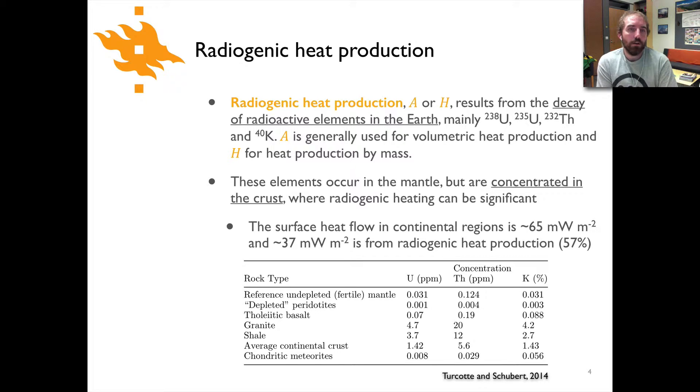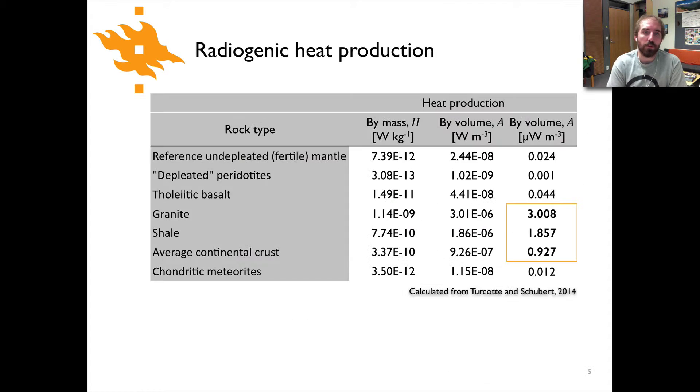The heat flow as we mentioned in the previous lecture in continental regions is about 65 milliwatts per square meter and about half of that, 37 milliwatts per square meter, is from radiogenic heat production. So actually over half is thought to be the result of radioactive decay within the crust.